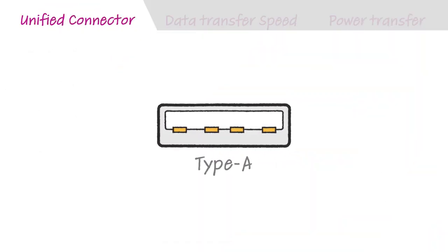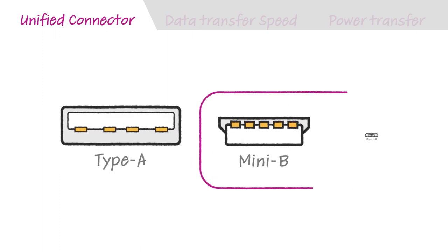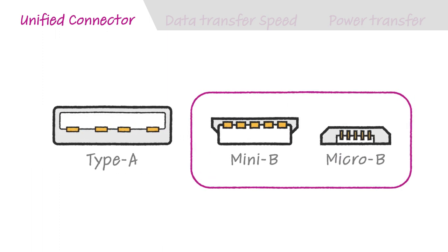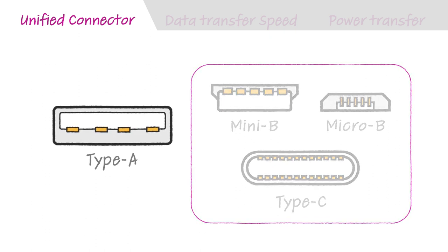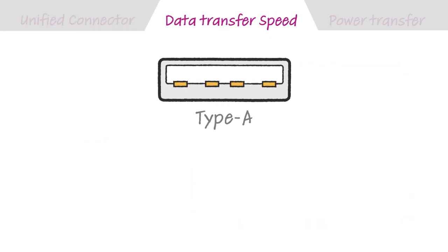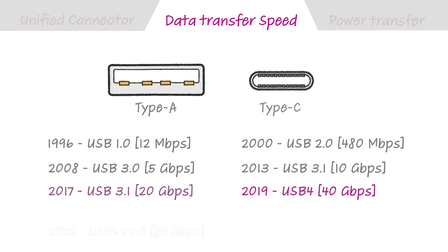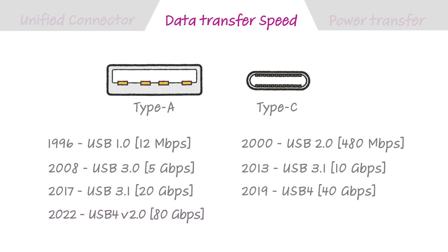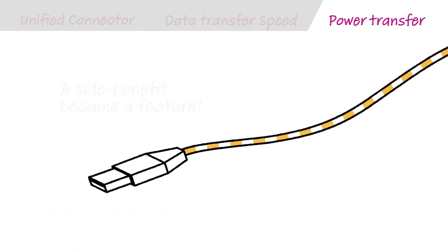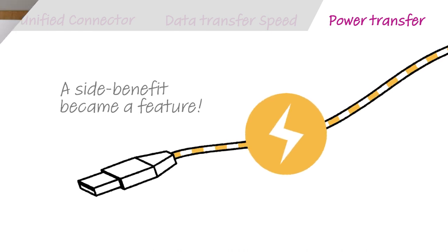There are three separate aspects of USB that have become standardized and improved over time. First was the unified connector — the Type A connector that has become absolutely ubiquitous — though over time additional types have been created, such as the Type B, mini, and micro connectors, as well as Type C in more recent years. Second was the data transfer speed, which increased by stages. Finally, the power transfer, which started as a simple side benefit and is now a standardized feature.